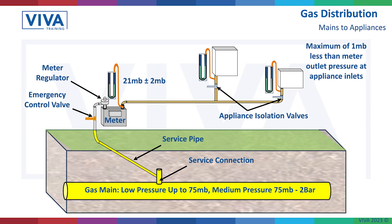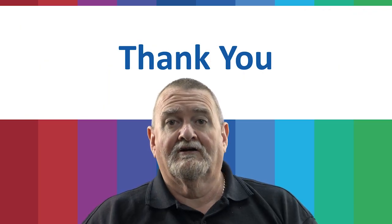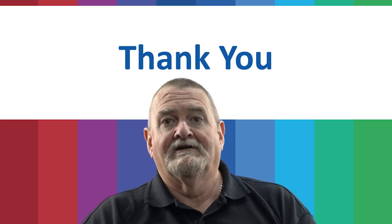That meter regulator is designed to maintain in our properties 21 millibar plus or minus 2 millibar. So it doesn't matter whether you've just got your gas cooker on, or your gas fire, or your gas fire and your gas cooker and your boiler — it's designed to maintain that pressure at 21 millibar plus or minus 2 millibar. In the middle of the night when very few people are up, if we didn't have a regulator and you put your gas cooker on, the flame could be 4 or 5 feet high. Each appliance has got an isolation valve and pressures can be checked at those. The gas regulations say we shouldn't lose more than one millibar pressure between our appliance and our meter.